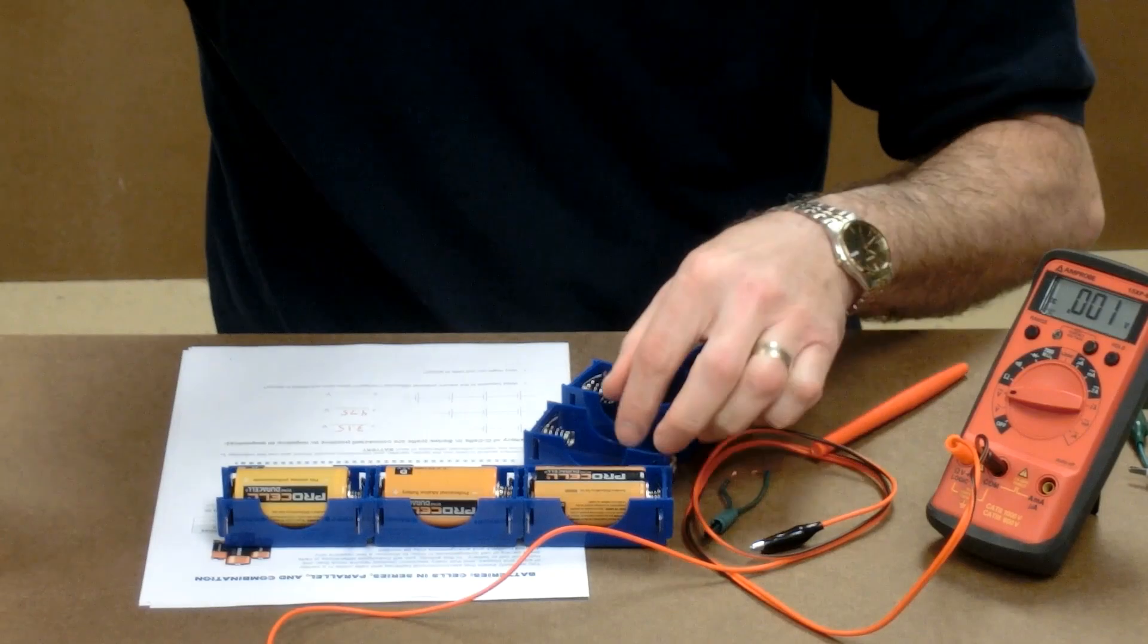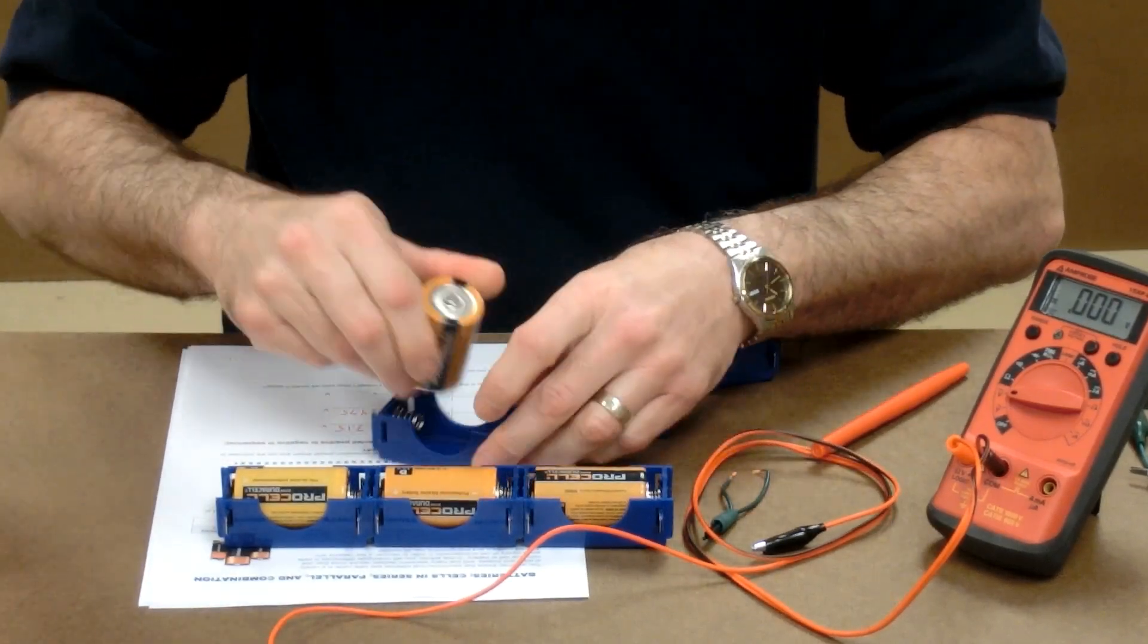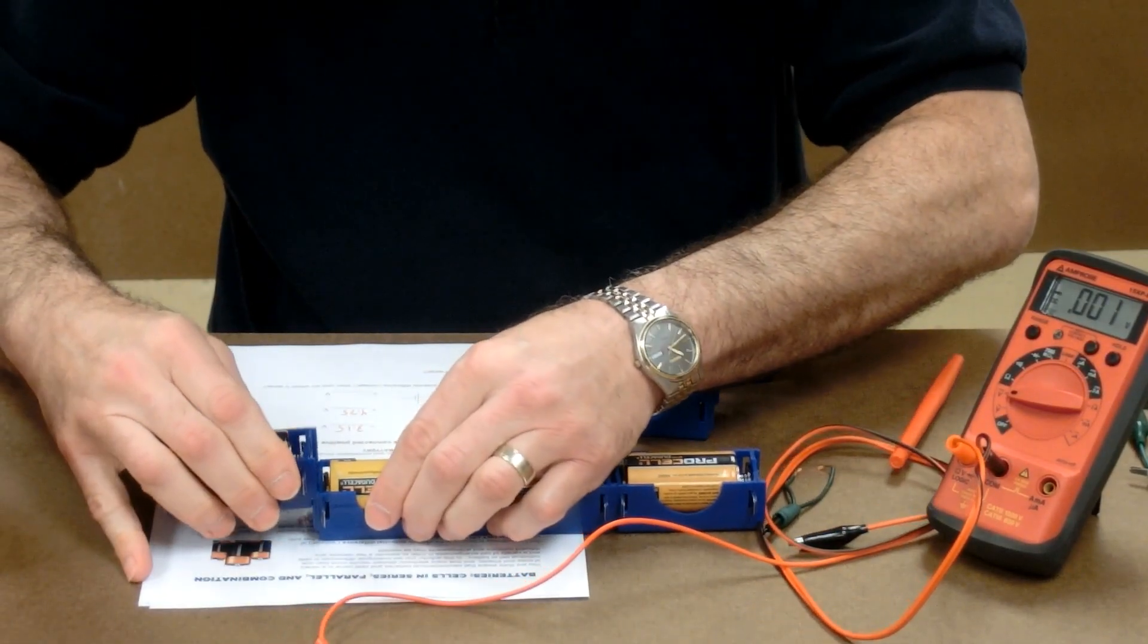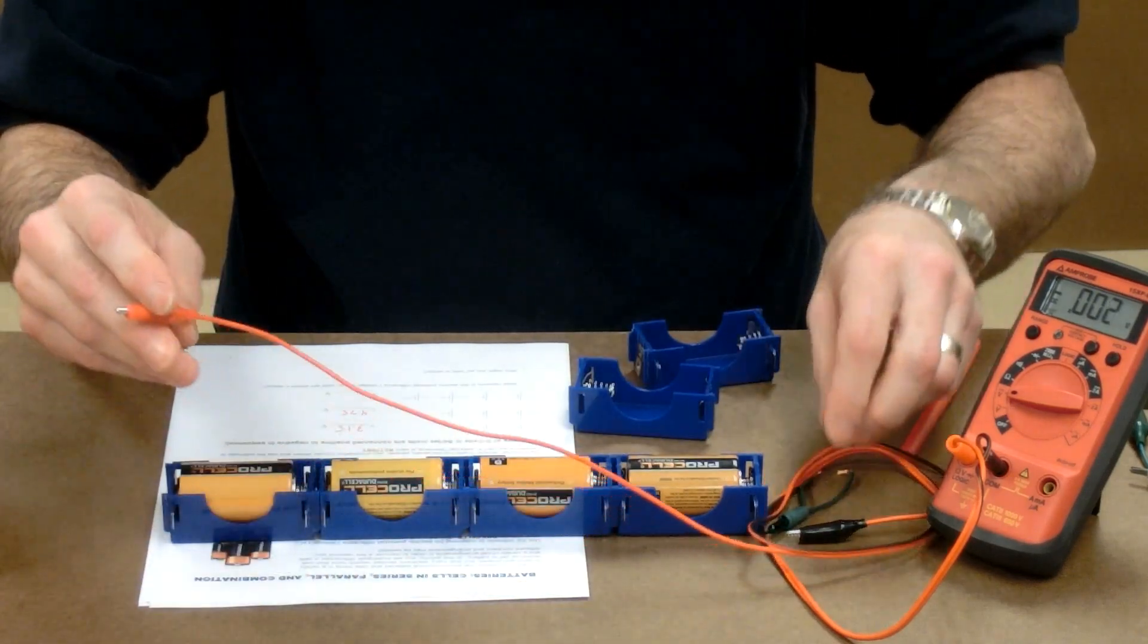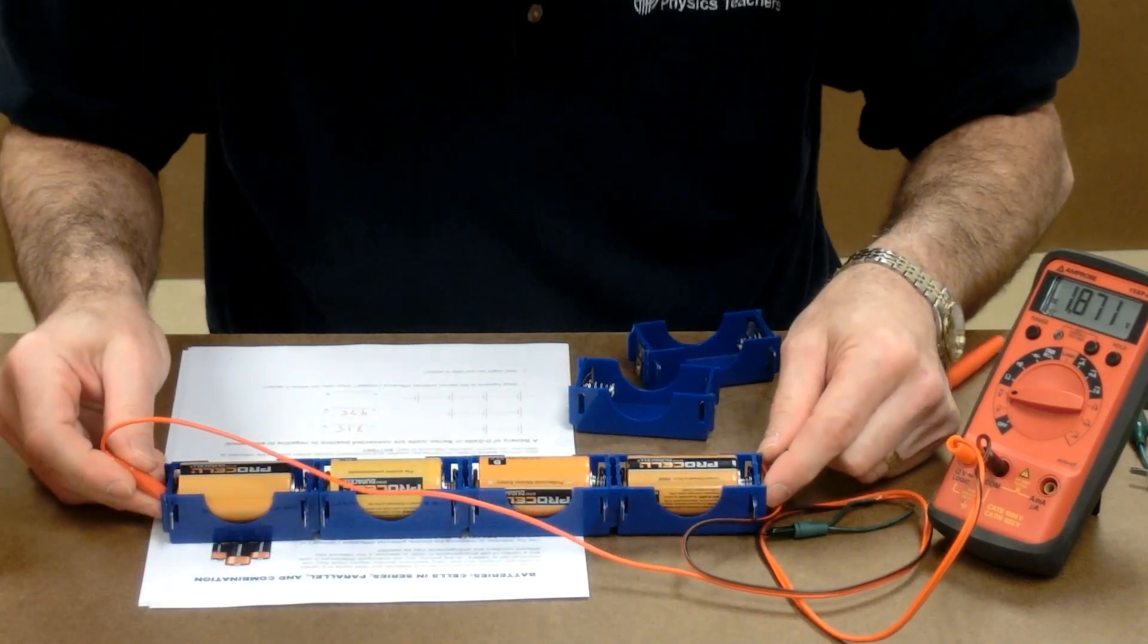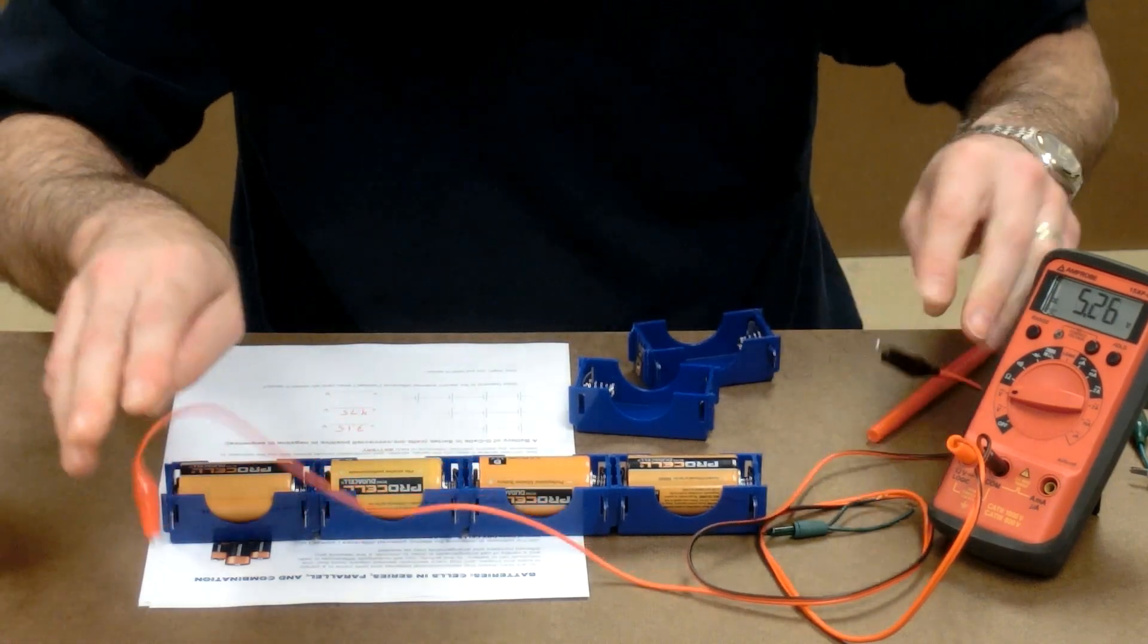Can you make a prediction what four cells in series would be? Four in series gives us 6.34 volts.